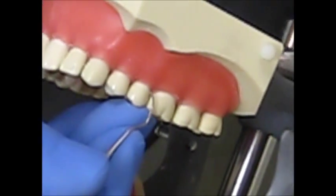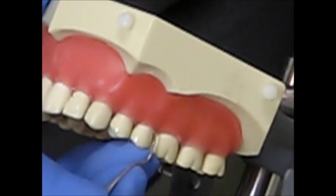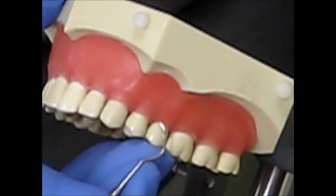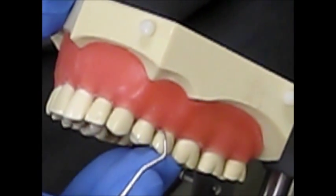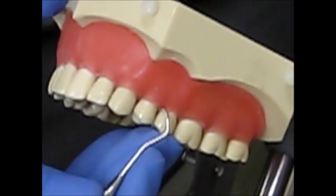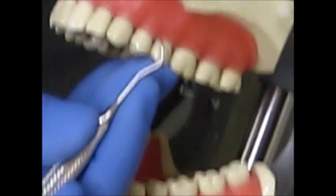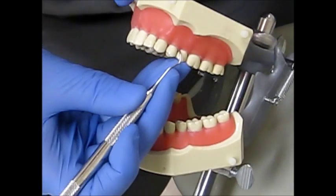Rotate to the opposite cutting edge, distal line angle to mesial interproximal, tilting the shank slightly towards the tooth to maintain a face to tooth angle of between 60 and 80 degrees.